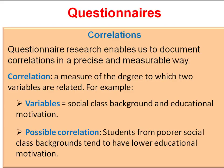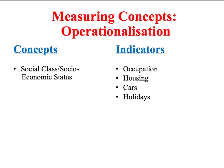A correlation is a measure of the degree to which two variables — two factors — are related. For example, in education we might study the relationship between social class background and educational motivation to see whether these two factors are linked. Descriptive terms like social class or socio-economic status are called concepts — the tools or ideas that sociologists use to describe the social world. If they're going to do quantitative research, they have to find ways of measuring these concepts, a process technically called operationalisation. The ways in which sociologists measure concepts are called indicators.